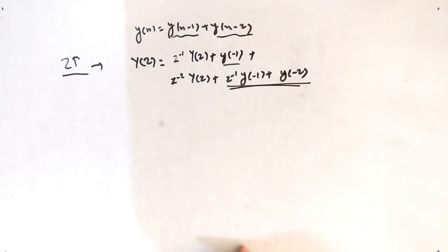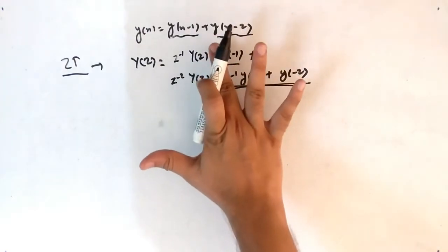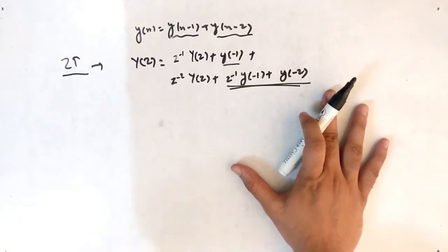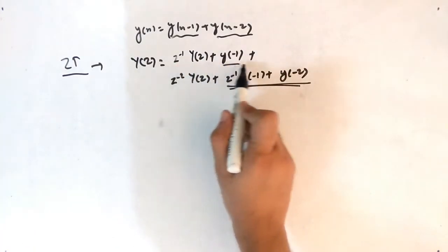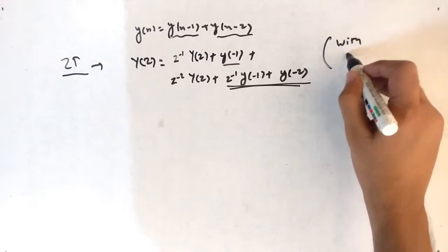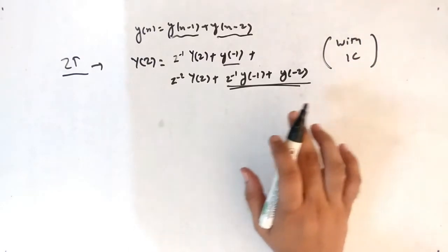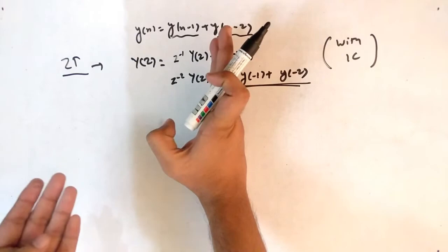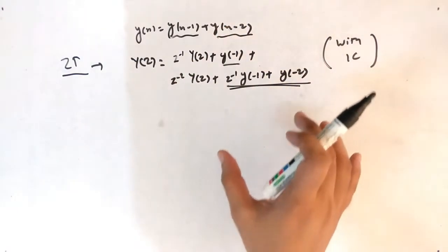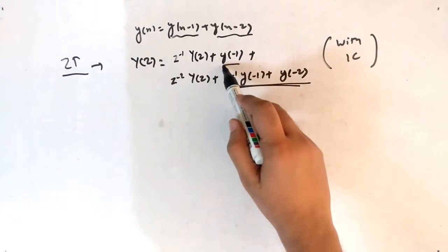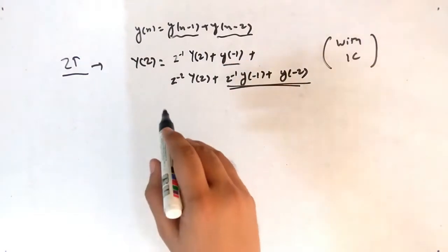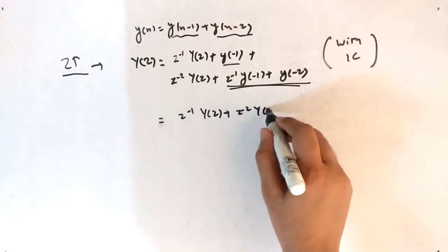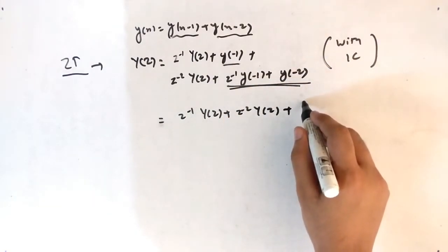If there were no initial conditions, those underlined terms would be zero. But in our question we have initial conditions, so we plug in the values: Y(-1)=0 and Y(-2)=1. Substituting: the Y(-1) terms drop out (since Y(-1)=0), and we get Y(Z) = Z⁻¹·Y(Z) + Z⁻²·Y(Z) + 1.